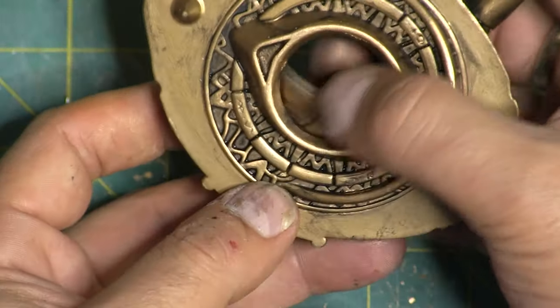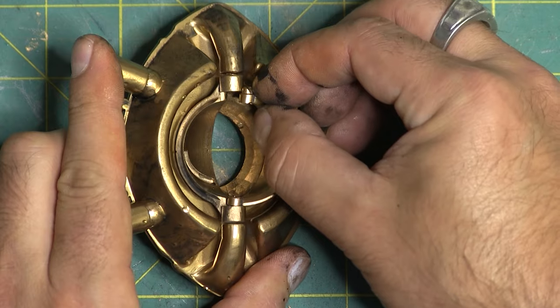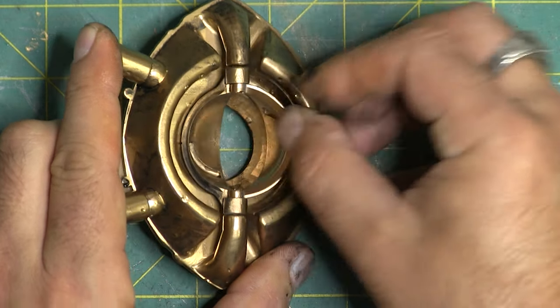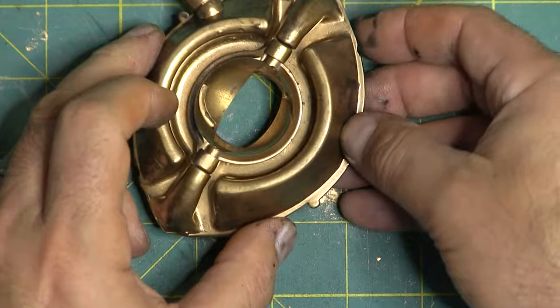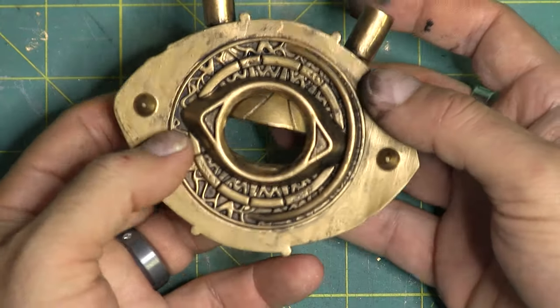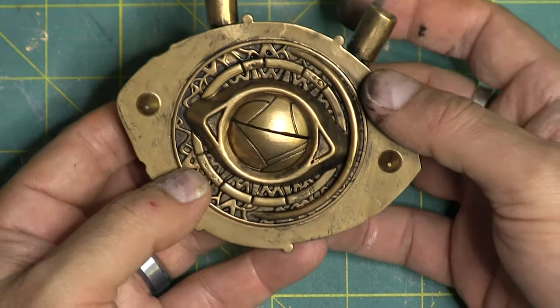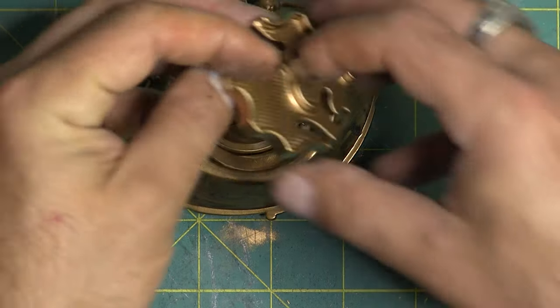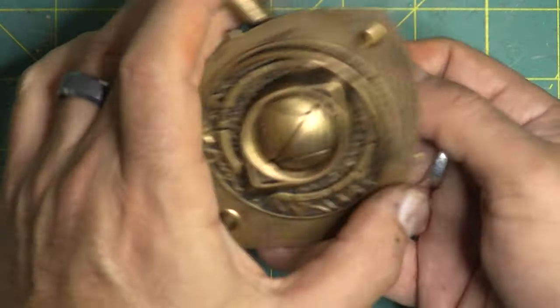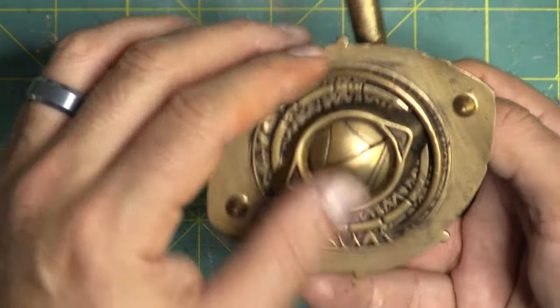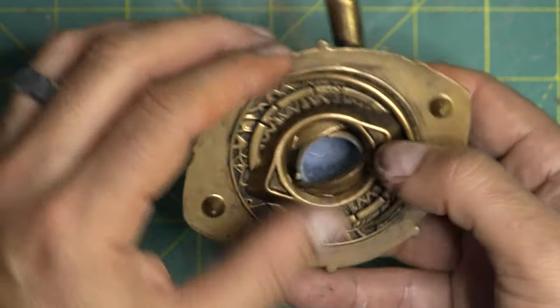And now we're going to go ahead and put the covers on, eyelids maybe, let's call them that since it's the eye of Agamotto. So I just popped those in. Be careful if you print this with SLA, I did break a set. And this is a little piece that opens and closes it. I did not use it for this, but we'll see what I did use later in the video.